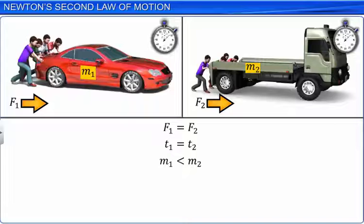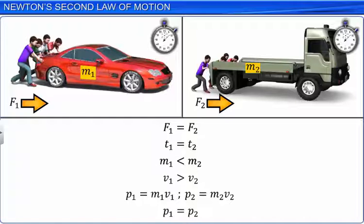Therefore, the momentum acquired is also the same even though the mass of the car and the truck is different. Hence, a body of lesser mass moves with greater velocity compared to a body of greater mass, but the product of the mass and its velocity remains the same in both cases.